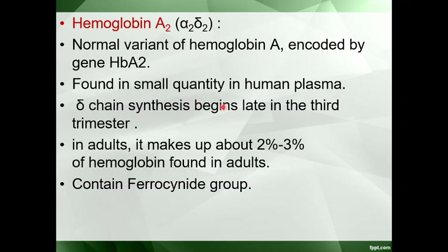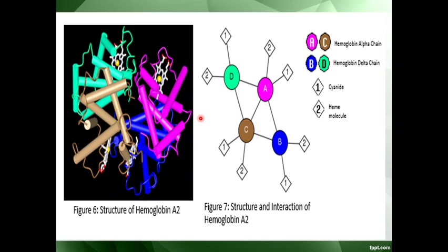Delta chain synthesis begins late in the third trimester. In adults, hemoglobin A2 makes up 2 to 3% of the total hemoglobin. It contains a ferrocyanide group, which is an important feature of hemoglobin A2.